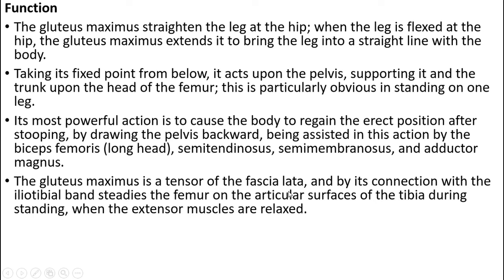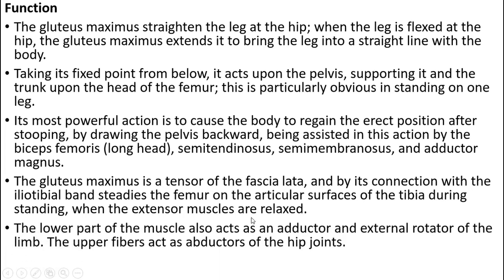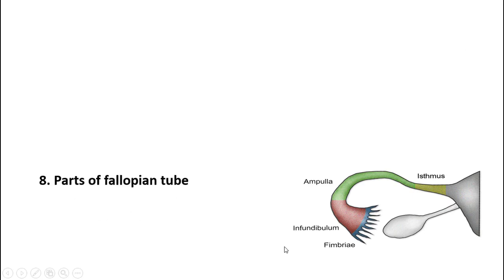Gluteus maximus is a tensor of the fascia lata and by its connection with the iliotibial band steadies the femur on the articular surface of the tibia during standing when the extensor muscles are relaxed. The lower part of the muscle also acts as an abductor and external rotator of the limb. The upper fibers act as abductors of the hip joint.